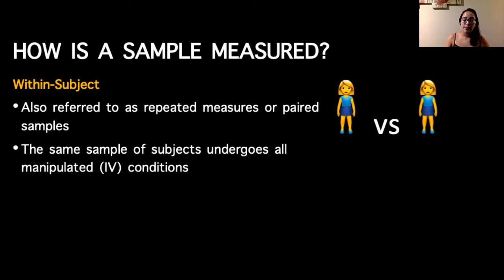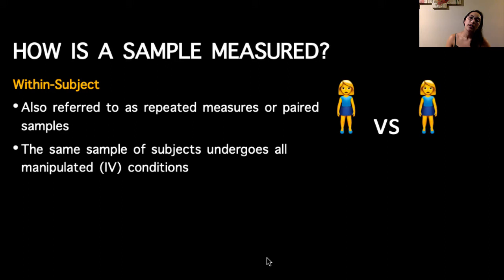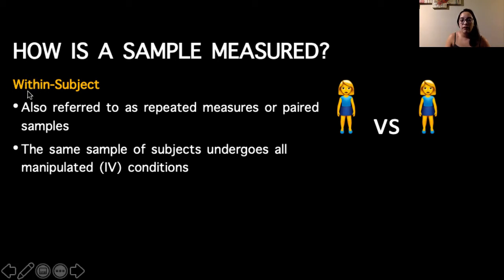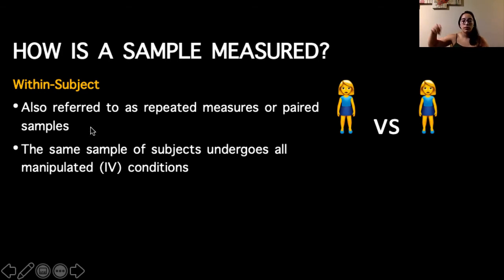Now we need to discuss how a sample is measured. This concept will be repeated throughout the semester. The first type of sample is a within-subject sample, often also referred to as a within-subject study design. Within statistical tests, within subjects are also referred to as repeated measures or paired samples. This means the same subjects undergo all of the manipulated or independent variable conditions.